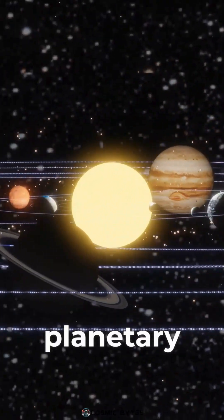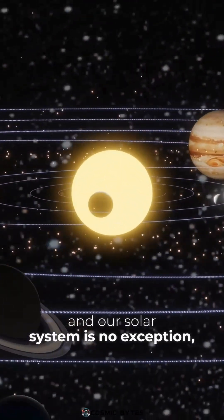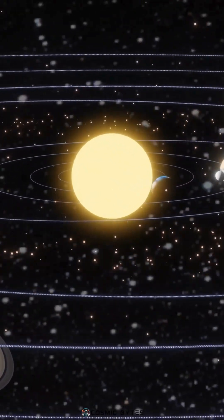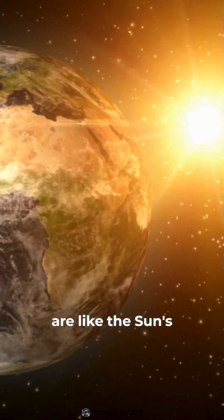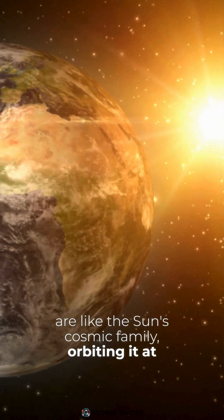Stars like our Sun often have planetary systems, and our solar system is no exception, with eight planets orbiting the Sun. These planets, including Earth, are like the Sun's cosmic family, orbiting it at varying distances.